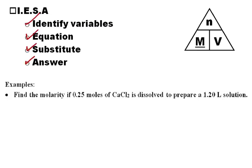First one here, find the molarity if 0.25 moles of calcium chloride is dissolved to prepare a 1.20 liter solution. So we can say that N is 0.25 moles, and we have the 1.20 liters, and that's a volume. So the only thing we have left over here is molarity. So molarity is what we're looking for.